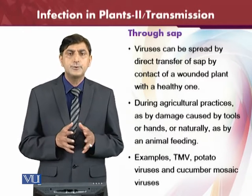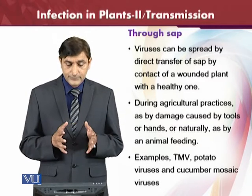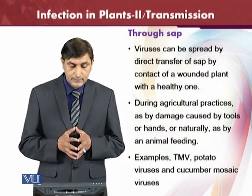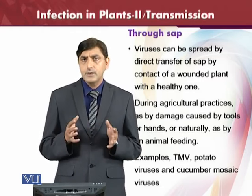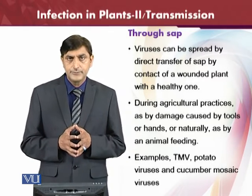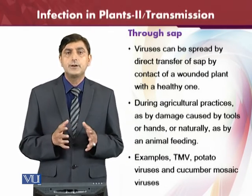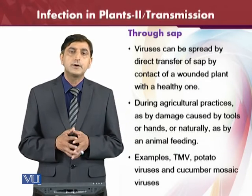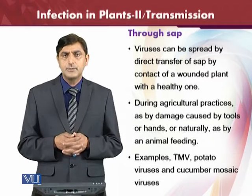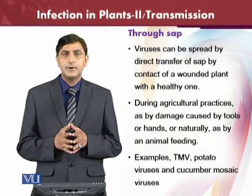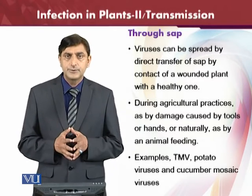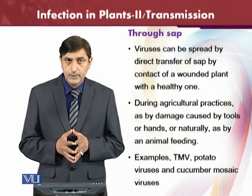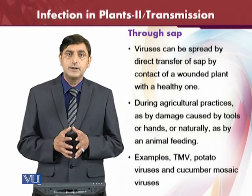First and most important is transmission through sap. Viruses can be spread by direct transfer of sap through contact of wounded plants with healthy ones. This direct contact happens because viruses act upon wounded plants. Wounds on plants are very common due to agricultural practices — we use pesticides or different tools to maintain our plants, so plants can be injured very easily.